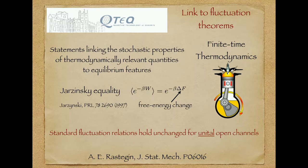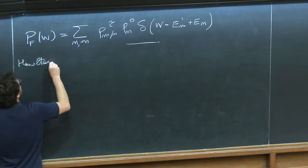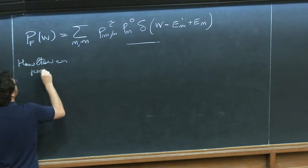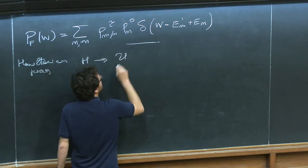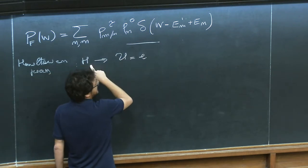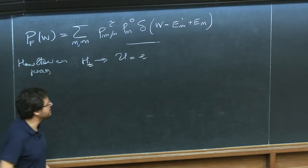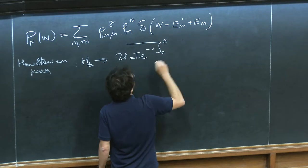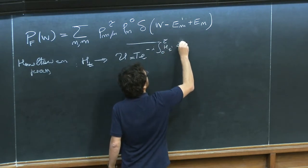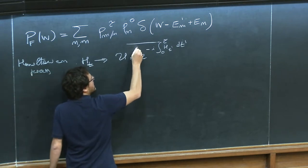Let's go through what a unital process is. The definition is simple. For a Hamiltonian process where I define a Hamiltonian, I have a time evolution operator U. If this Hamiltonian is time-dependent, this operator is the result of the exponentiation of my Hamiltonian with the time-ordering operator T — the Dyson ordering operator — basically the expansion of the exponential in time. Any initial state of my system evolves according to this dynamics, giving me the state at time tau.